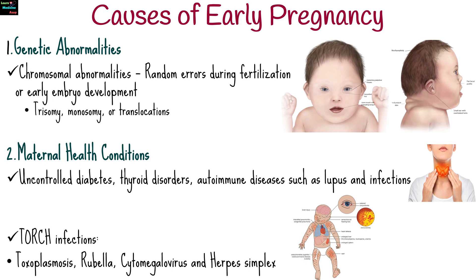TORCH is an acronym used to describe a group of infectious diseases that can be transmitted from a mother to her baby during pregnancy, potentially causing congenital infections. Specifically, these include toxoplasmosis, rubella, cytomegalovirus, and herpes simplex.